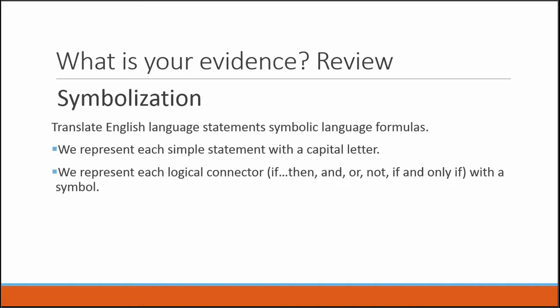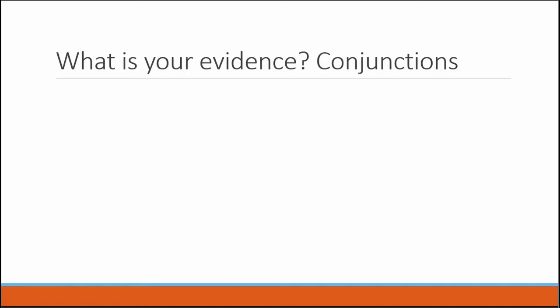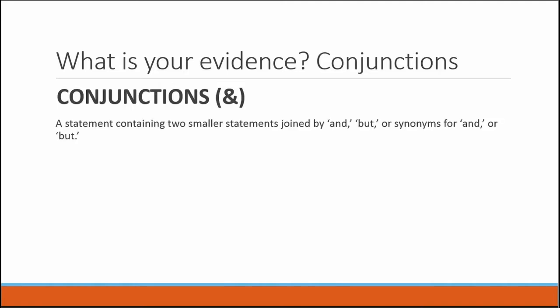In the last lesson, we learned the if-then connector, which we represent with the right-facing arrow. In this lesson, we're going to learn the and connector. Conjunctions: statements connected by the logical word 'and' are called conjunctions. And we are going to use the ampersand symbol to represent the logic word 'and.' A conjunction is any statement containing two smaller statements joined by the word 'and,' 'but,' or synonyms for 'and' and 'but.'